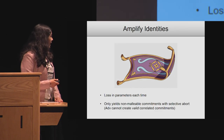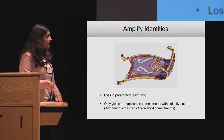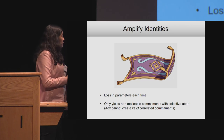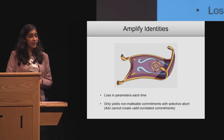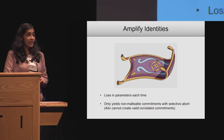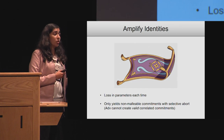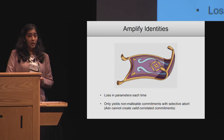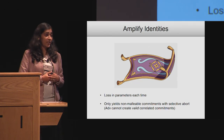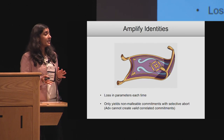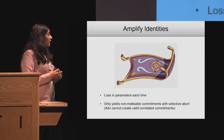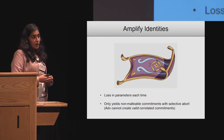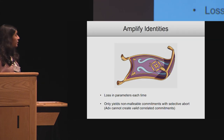The other feature is that this only yields non-malleable commitments that suffer from a selective abort problem, which means the adversary cannot create commitments that are both valid and correlated with the honest party's value. But the adversary can sometimes create commitments where the probability of being invalid is a function of the message committed by the honest party. That's something we cannot deal with at the moment.